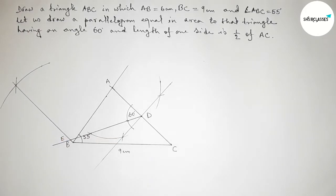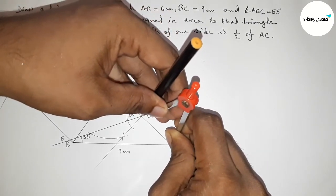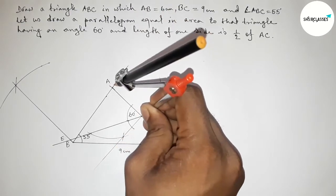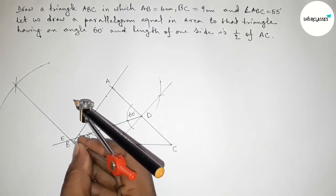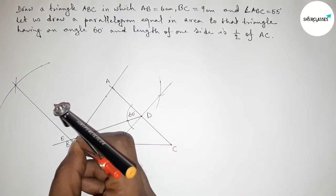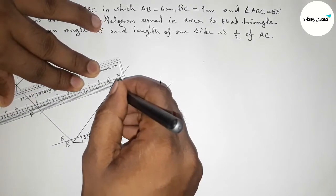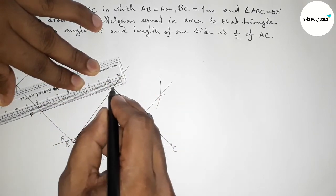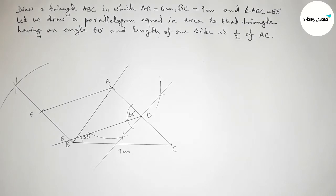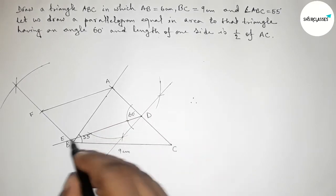Taking the lengths AD and CD with the compass — these lengths are equal — and also the length of BC, we put the compass on point E and mark a cut. We take this point as F. Joining A and F completes the parallelogram. We now have parallelogram ADEF.